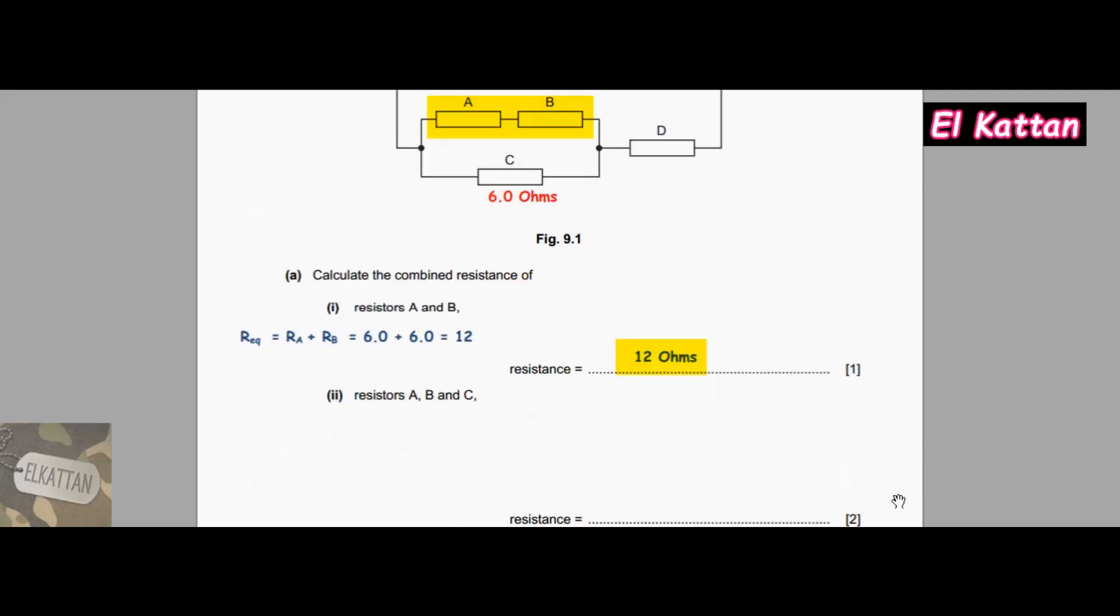For part (a)(ii), resistors A, B, and C: as shown in Figure 9.1, C is connected in parallel with A and B. The total resistance of A, B, and C equals R_equivalent from the previous part times R_C divided by R_equivalent plus R_C, which equals (6 × 12) / (12 + 6) = 4 ohms.